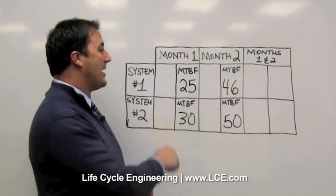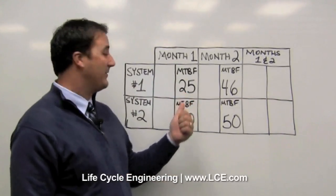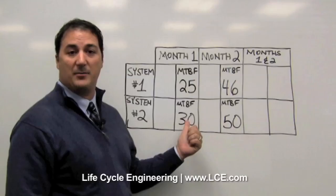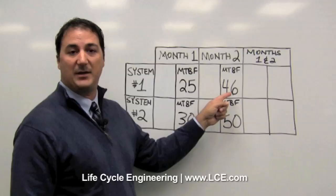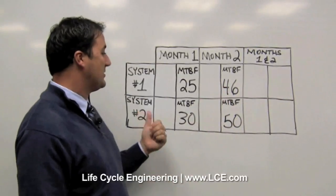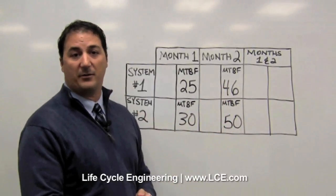In month one, system one had a mean time between failure of 25. In the same month, system two had a mean time between failure of 30. The next month, system one then had a MTBF of 46, while system two had a mean time between failure of 50.